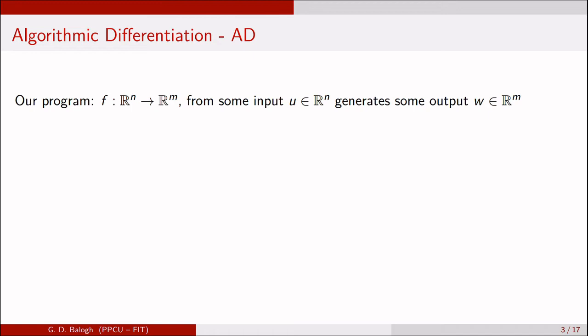Let's take our program as a function which from a set of inputs generates a set of outputs. Our goal is to get the Jacobian of this function, where each element of the Jacobian is the derivative of some output with respect to some input.